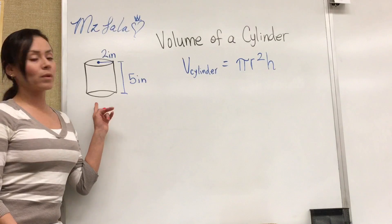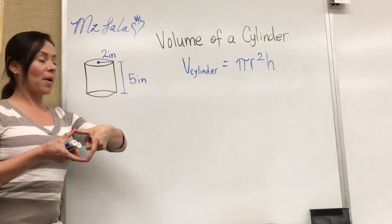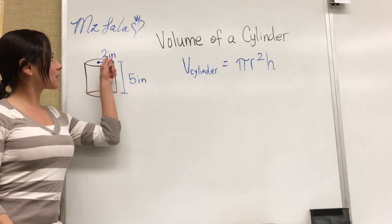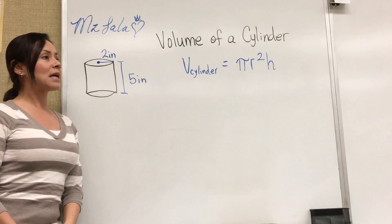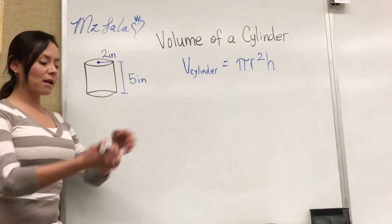So to find the volume of a cylinder you need the radius which is halfway from the center of the top or the bottom and it goes to one of the ends of the circle. In this case our radius is 2 inches. Then we also need the height which in this case is 5 inches and we need pi.